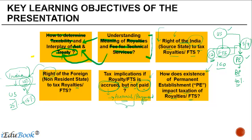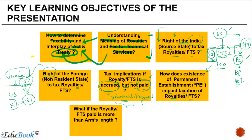The next point is what if the royalty or FTS paid is more than arm's length. For example, if the arm's length royalty should be $150 but the Indian company actually pays $200 to the non-resident, the question is whether Article 12 applies to the full $200 or only to the arm's length amount of $150. The general rule is that Article 12 applies only to the payment equivalent to the arm's length amount.